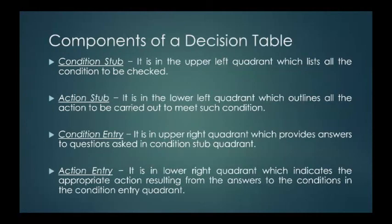These are the different components of a decision table. First, we have the conditions stub. It is in the upper left quadrant, which lists all the conditions to be checked. Two, actions stub. It is in the lower left quadrant, which outlines all the action to be carried out to meet such condition. Number three, the condition entry. It is in upper right quadrant, which provides answers to questions as in conditions stub quadrant. Four, the action entry. It is in lower right quadrant, which indicates the appropriate action resulting from the answers to the conditions in the condition entry quadrant.